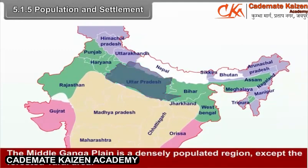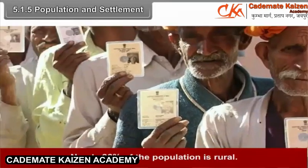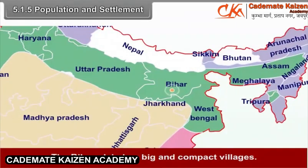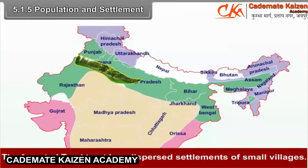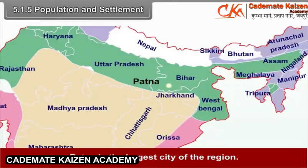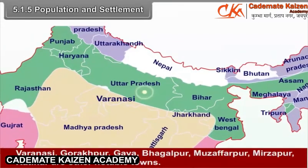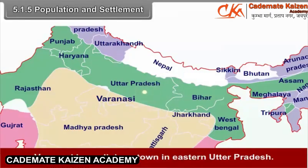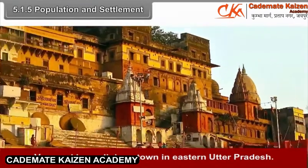The Middle Ganga Plain is a densely populated region. Except the forested Tarai area, nearly 93% of the population is rural. The Bihar Plain has big and compact villages. The forested Tarai tract has dispersed settlements of small villages. Patna is the largest city of the region. Varanasi, Gorakhpur, Gaya, Bhagalpur, Muzaffarpur, and Katihar are other notable towns. Varanasi is a religious town in eastern Uttar Pradesh.